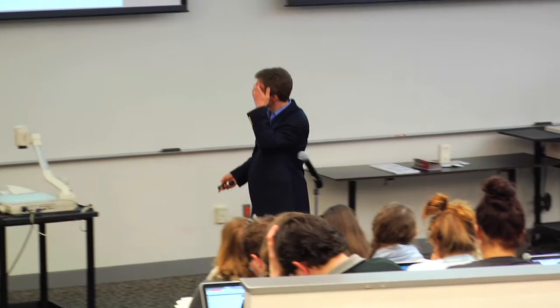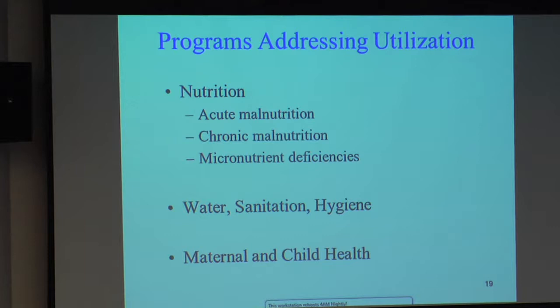Let's get to programs. When we think about programs, I'll start with the utilization ones — programs trying to address undernutrition. We can think about these in a few categories. As we saw when looking at the determinants of undernutrition, water, sanitation, and hygiene are also determinants, as are maternal and child health. When thinking about programs trying to improve hygiene or maternal and child health, food aid is definitely not the most important component of those types of programs.